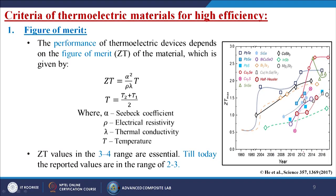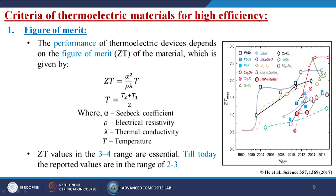What are the criteria of thermoelectric materials for high efficiency? The first one is known as the figure of merit. The performance of thermoelectric devices depends on the figure of merit of the material, given by ZT = α²/(ρλ) × T, where T = (T2 + T1)/2, α is the Seebeck coefficient, ρ is the electrical resistivity, λ is the thermal conductivity, and T is the temperature. ZT values in the 3–4 range are essential; till today the reported values are in the range of 2 to 3. Scientists have reached up to 2 to 3 and the aim is to reach 3 to 4.